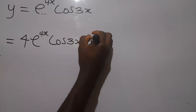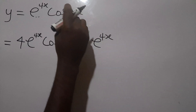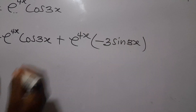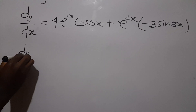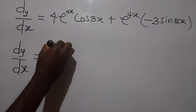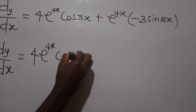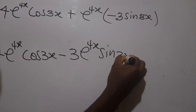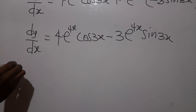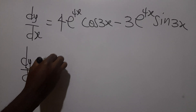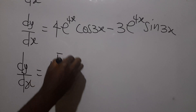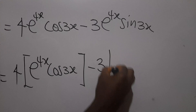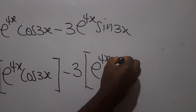Then plus: now we keep e^(4x) and differentiate cos(3x). When we differentiate cos(3x), we will get negative 3sin(3x). So we can say our dy/dx is equal to 4e^(4x)cos(3x) minus 3e^(4x)sin(3x). Remember this very well.